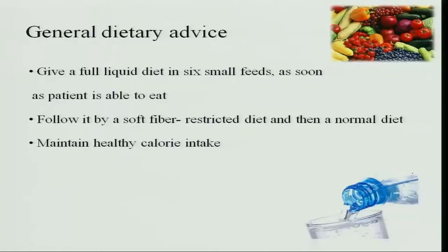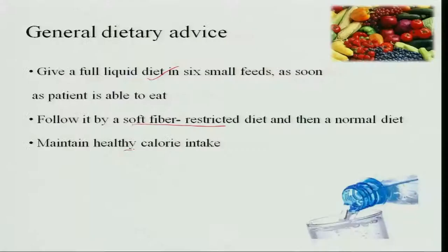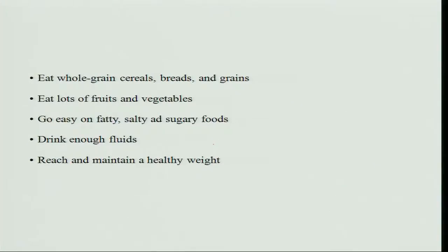A general dietary advice is to give a full liquid diet in small feedings because the increased energy amount cannot be given all at once. Give 6 small feedings and, as the patient is able to eat, increase the amount gradually. Then progress to a soft, fiber-restricted diet and then a normal diet. Food given should be easily digestible and easily assimilable. Give a healthy calorie intake with energy-dense and easily digestible foods. Eat lots of fruits and vegetables.